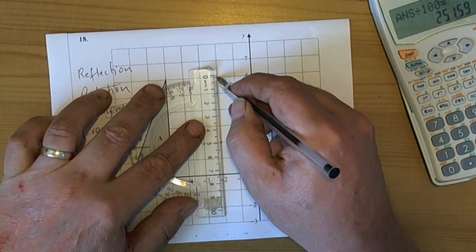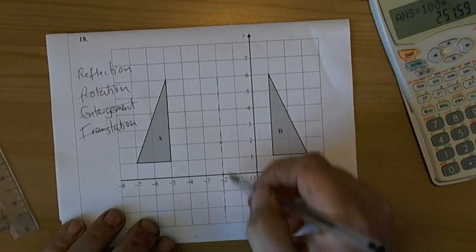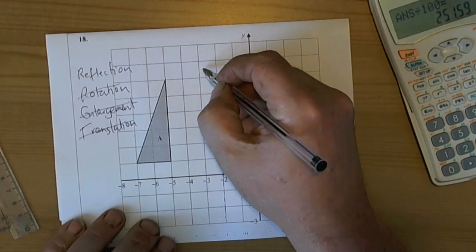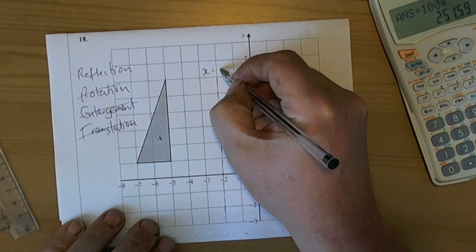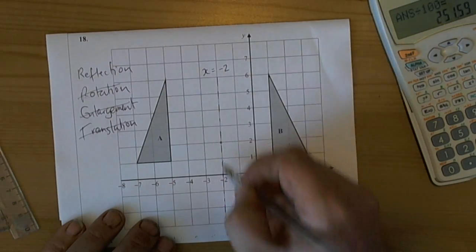and when we draw the mirror line on, we can see that it's a vertical line, and vertical lines always have the equations x equals something. In this case, because it's cross 3 minus 2, it's x equals minus 2.